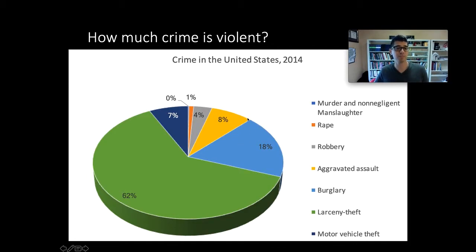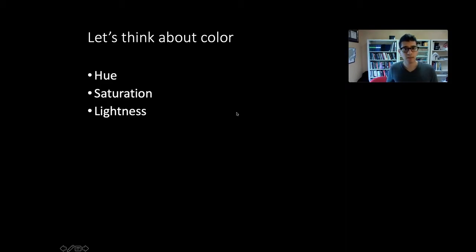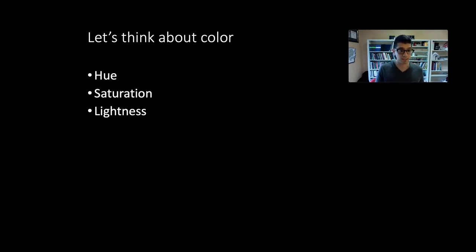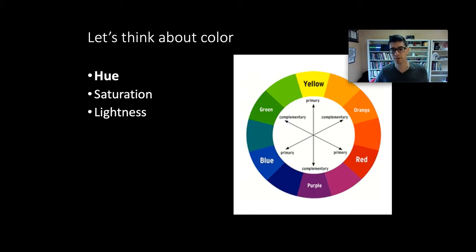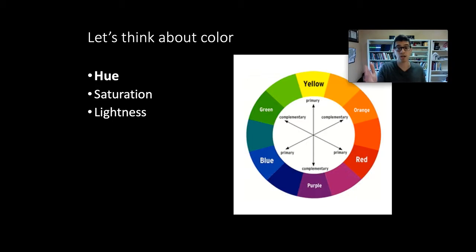So we'll walk through how to improve this chart step by step, starting with color. There's more information in the textbook for this week's readings. There are three components of color to keep in mind: hue, which is the kind of color—red, blue, yellow, etc.; saturation, which is the intensity of the color, like a red that really pops versus a very light red; and lightness or brightness, which refers to shades—dark red versus light red.